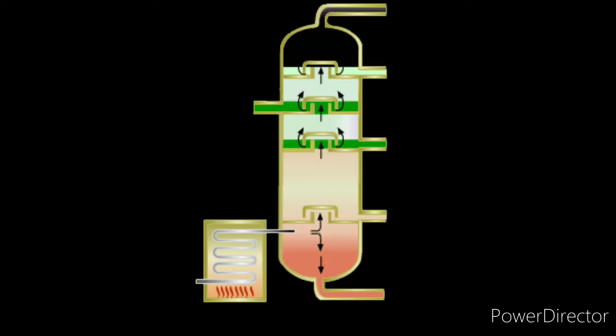To refine petroleum, tall steel fractionating towers are used. In these towers, crude oil is heated to around 400 degrees centigrade. On heating, the vapors produced move in an upward direction. The high boiling components start to condense and return towards the lower part of the tower.